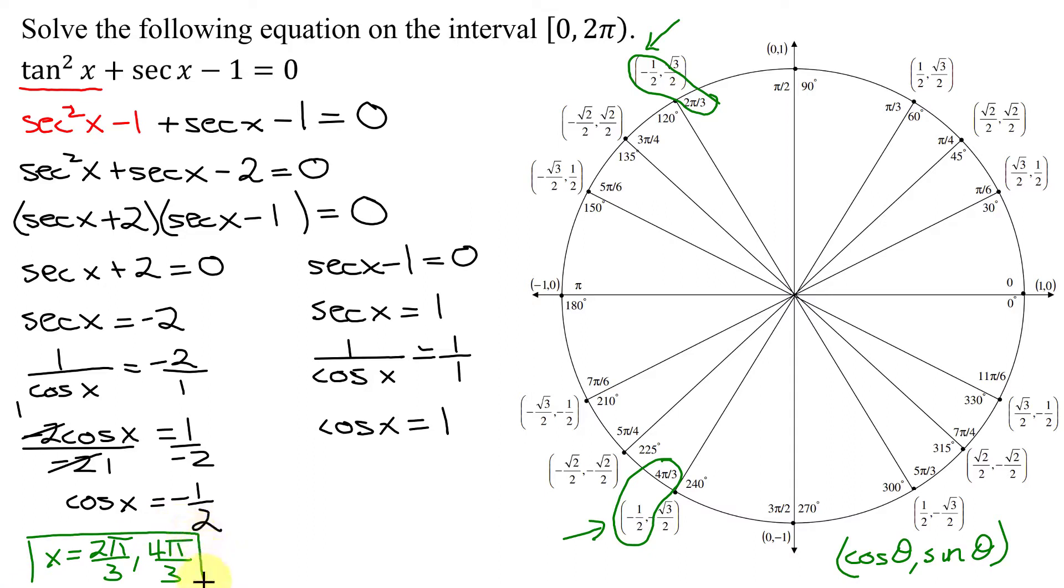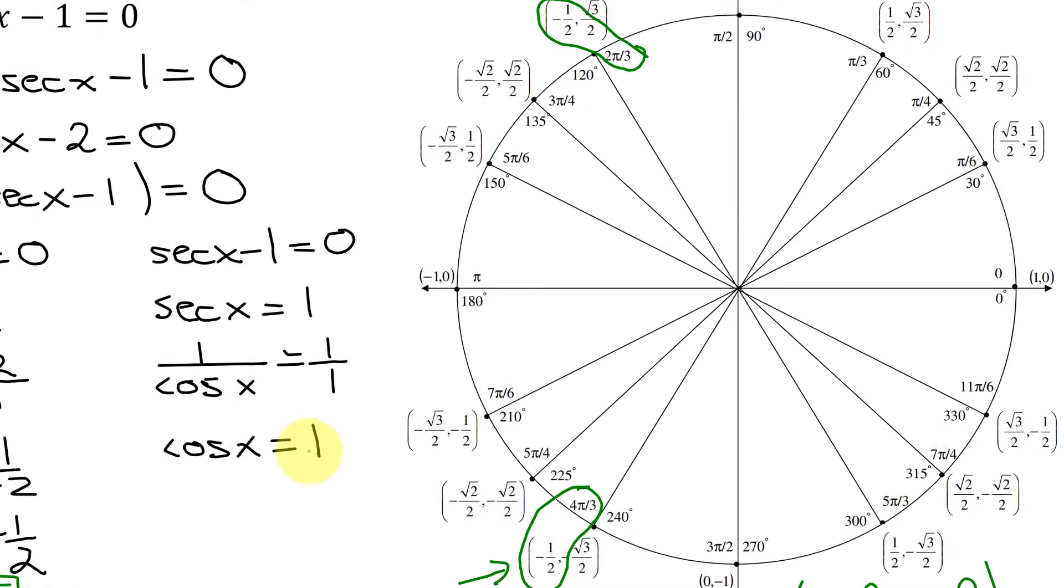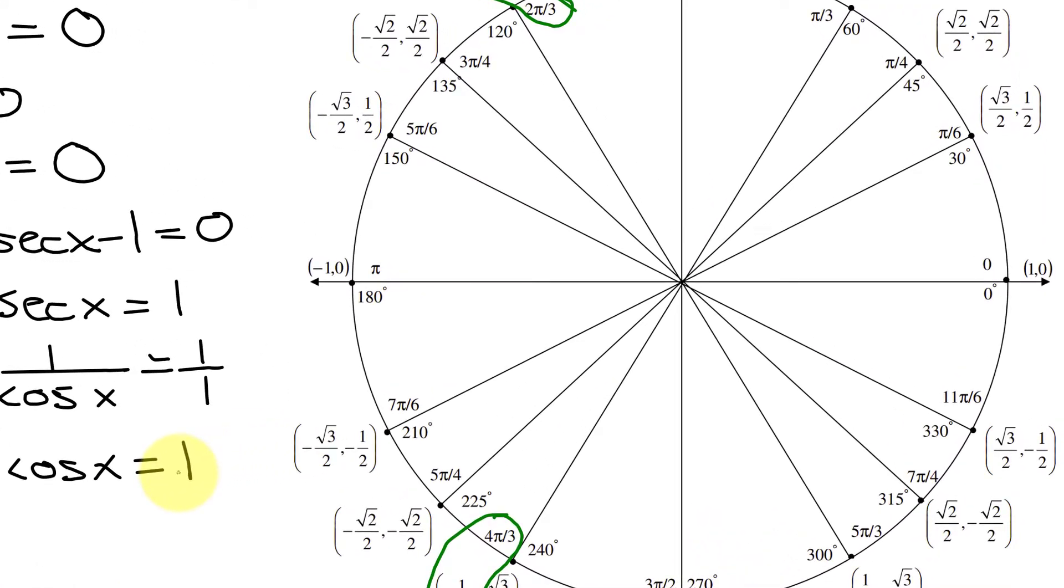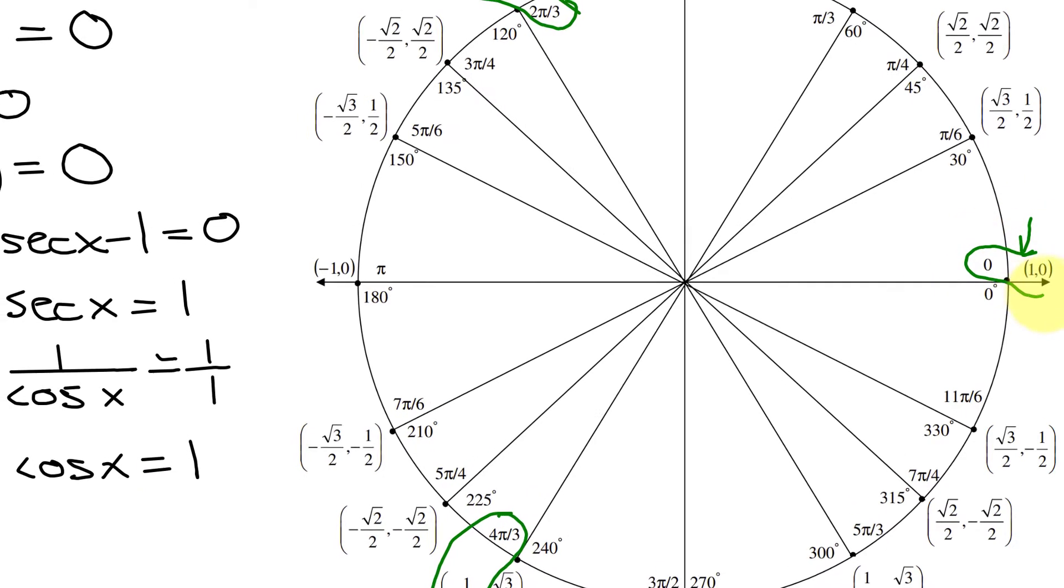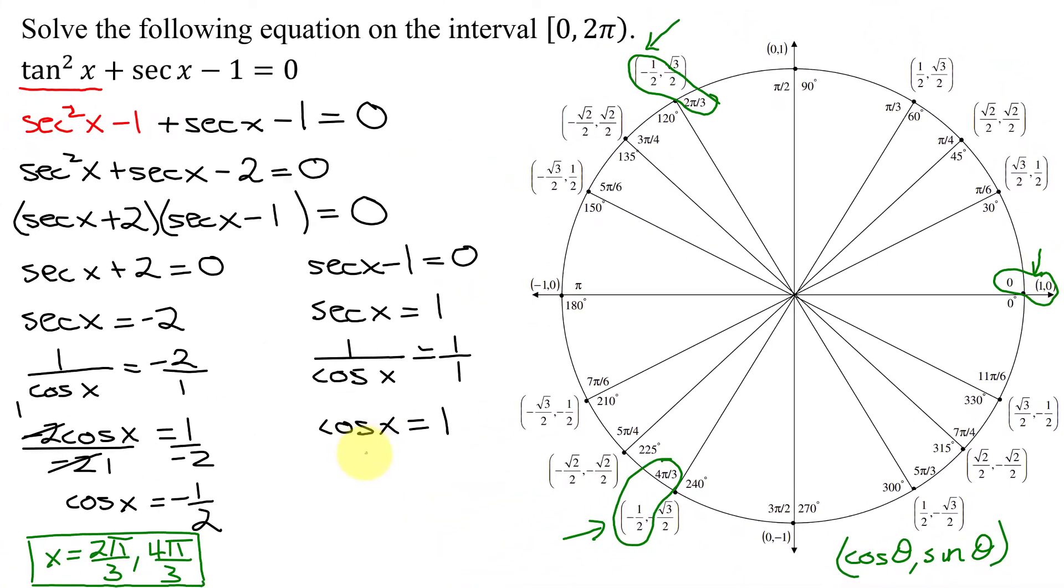So there are two solutions to this equation. And the last solutions come from when the cosine of x is 1. That means the x-coordinate is positive 1. That occurs only in one point on the unit circle right here at that point. And that is when x = 0. So this equation has three solutions in the interval 0 to 2π.